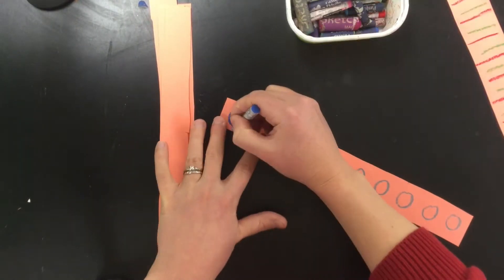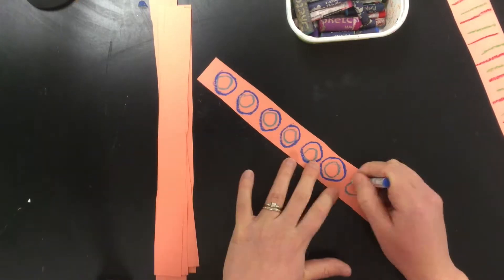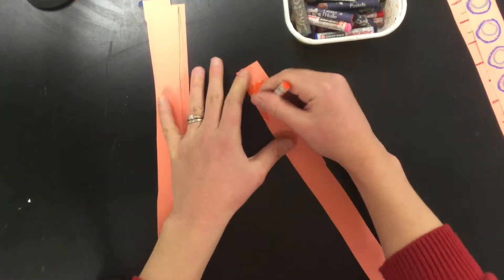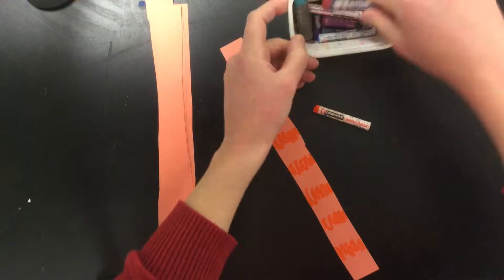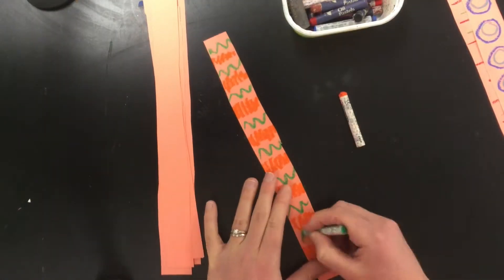So I'm doing my different patterns and I'm doing them on both sides of each strip. Same pattern on both sides but I'm thinking of a different pattern for each one.